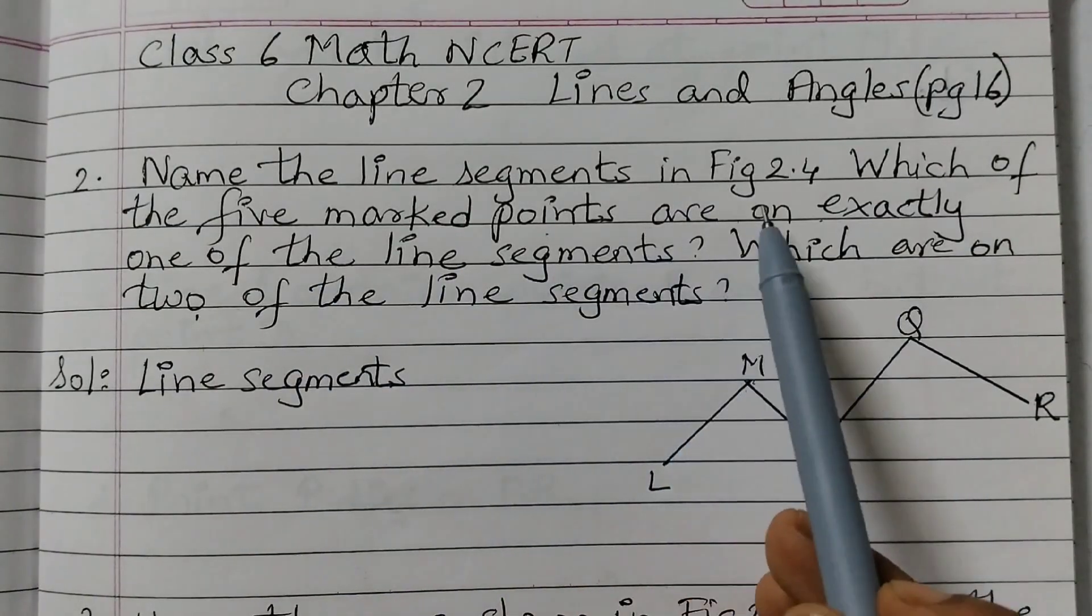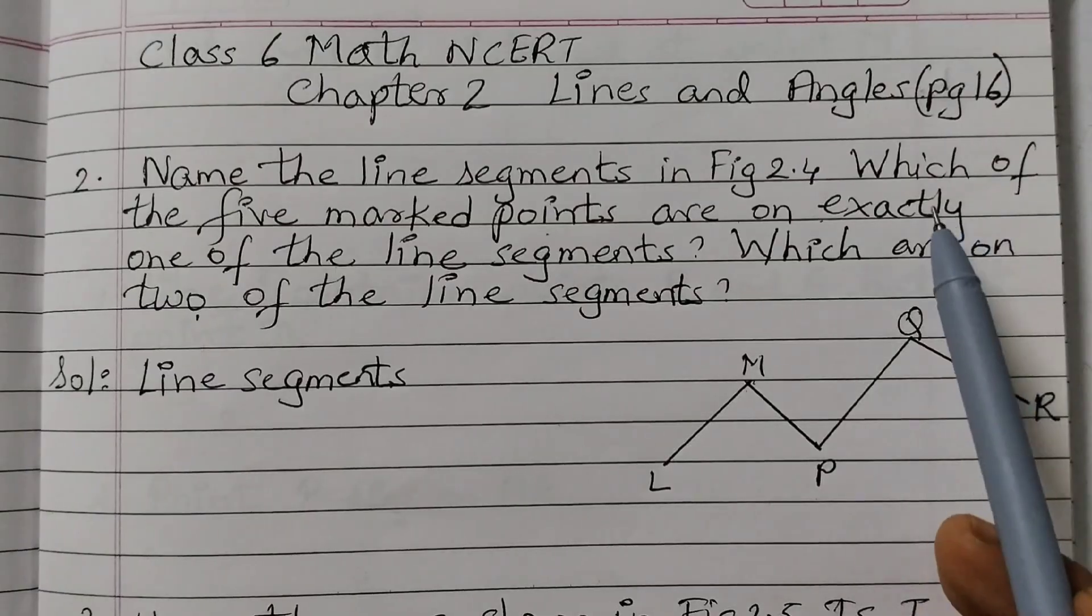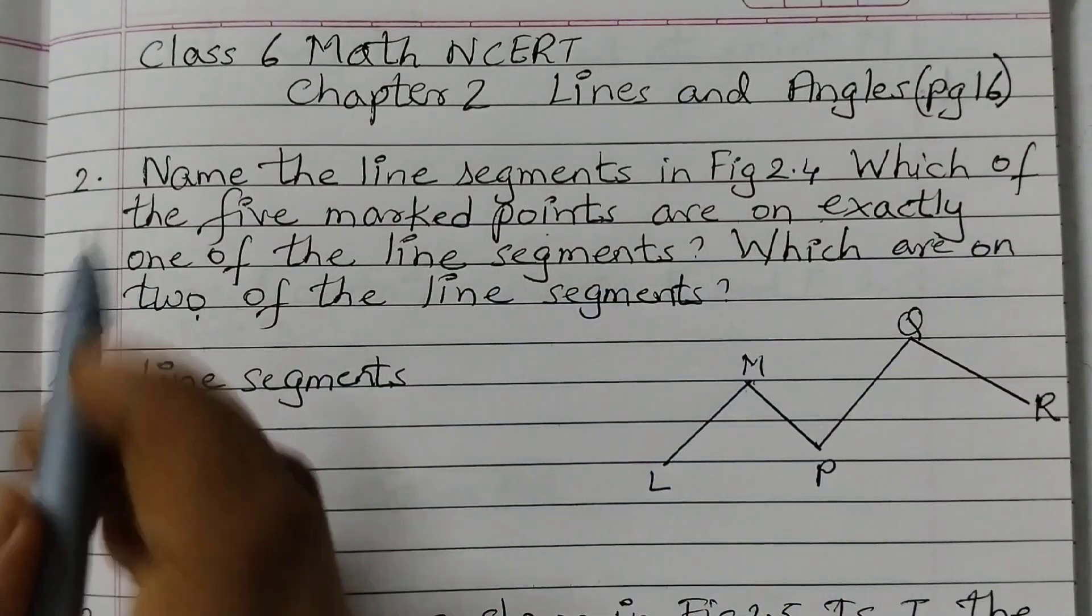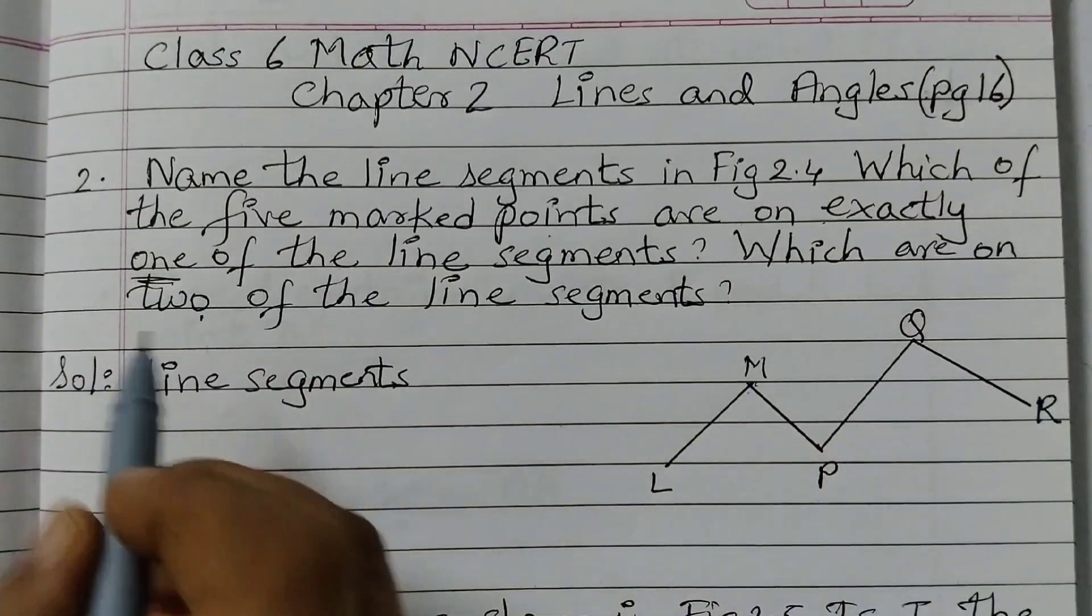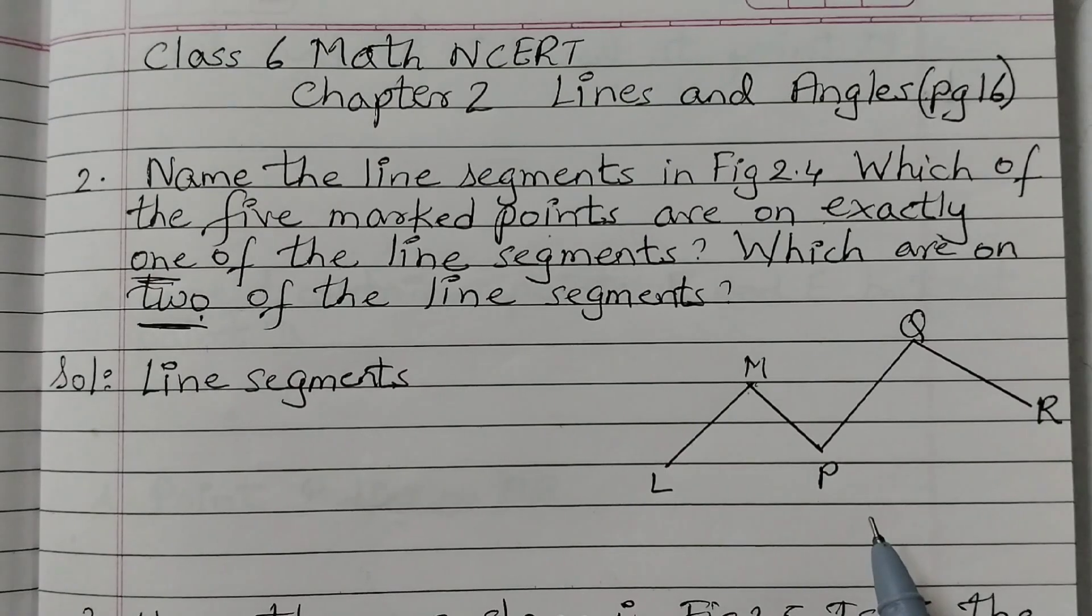Name the line segments in figure 2.4. This is given as figure 2.4 in the textbook. Which of the 5 marked points are on exactly one of the line segments and which are on two of the line segments. So in this figure, first we need to find out how many line segments are there. So what is a line segment? A line segment has two end points.